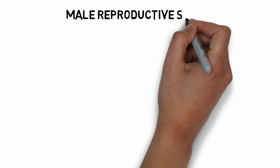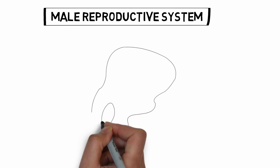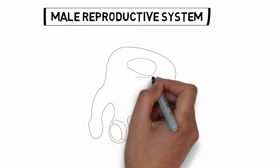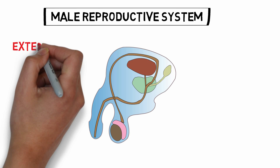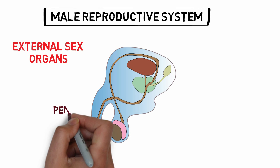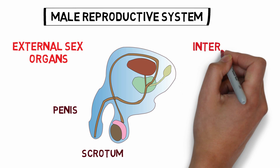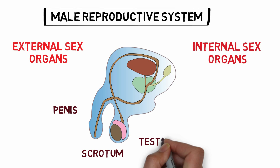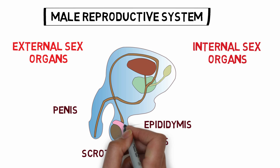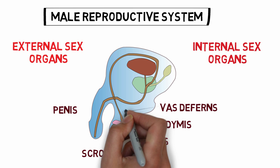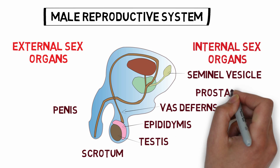In this video we will study about the male reproductive system. The male reproductive system consists of the external sex organs, which include the penis and the scrotum, and the internal sex organs, which include the testes, epididymis, vas deferens, seminal vesicle, and the prostate gland.